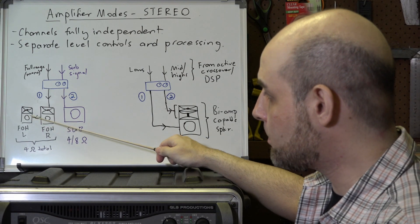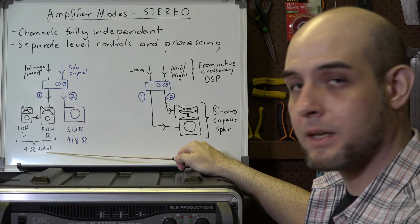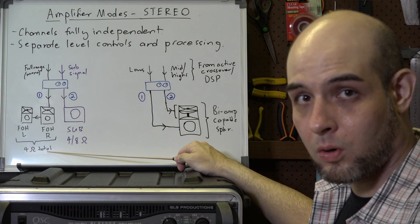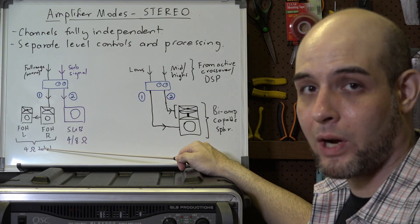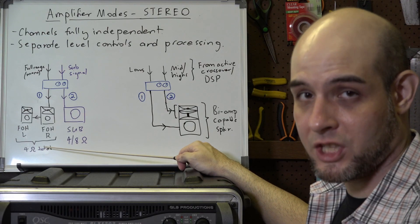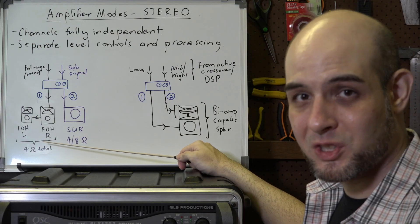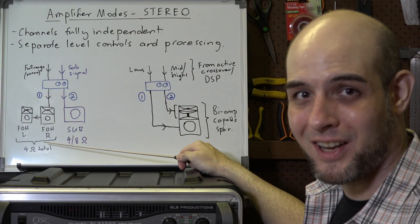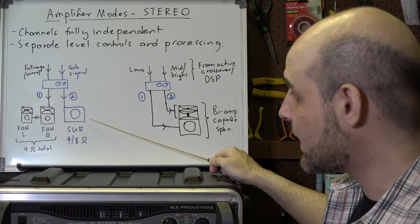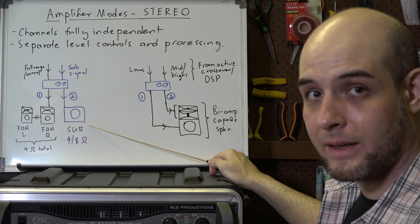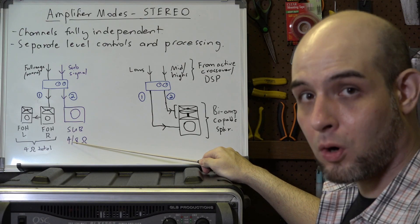If you combine two of those four-ohm cabinets, you'll have a combined impedance of four ohms, which raises the power output of that channel — lower impedance, higher power. This assumes your amplifier is designed to run into four ohms. You can then run a subwoofer that is also four ohms.